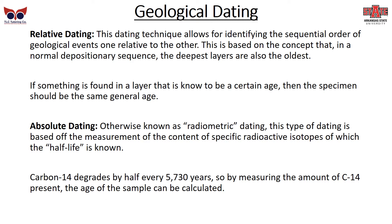Geological dating has two main ways to date something. One is relative dating — a technique that allows for identifying the sequential order of geological events, one relative to the other. Based on the concept that in a normal sequence, the deepest layers are also the oldest. If something is found in a layer that is known to be a certain age, then the specimen should be around the same general age.